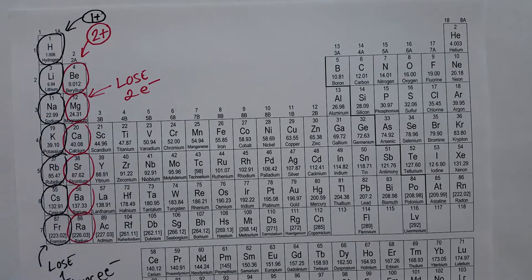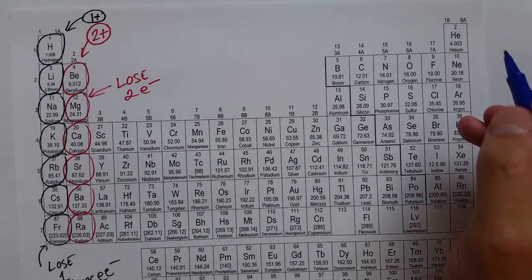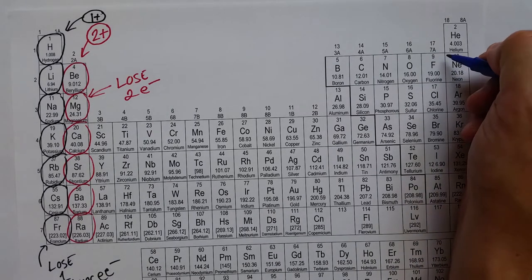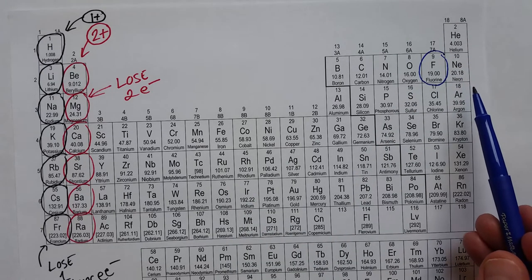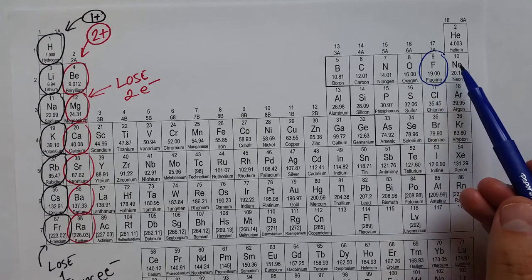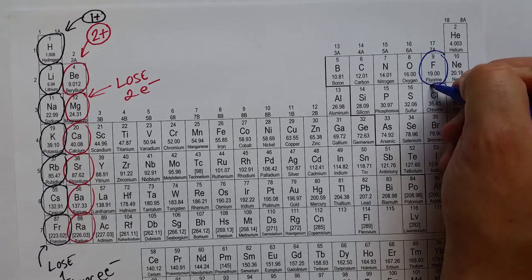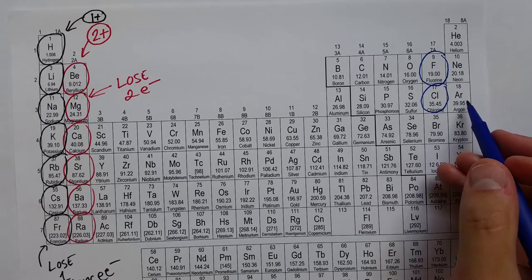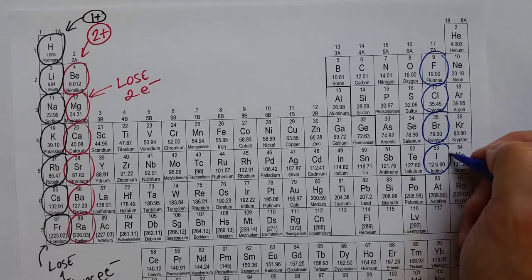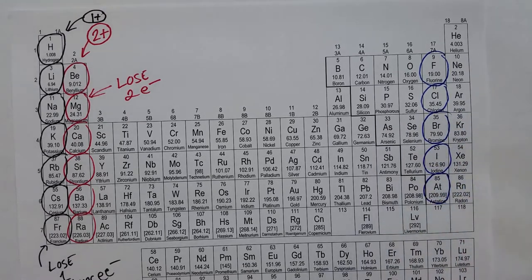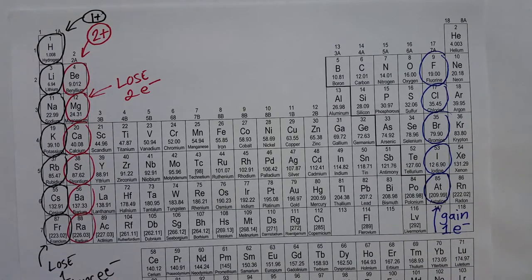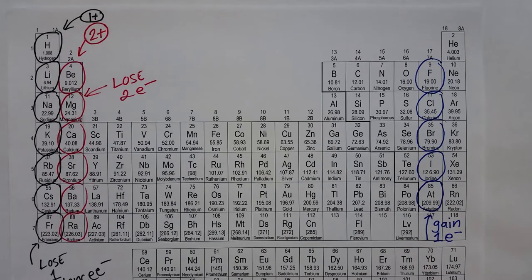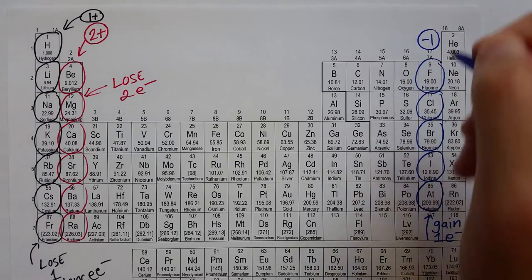On the other side of the periodic table, the nonmetals do something different. Instead of losing valence electrons, the halogens in group 7A will gain one electron to achieve the eight valence electron electronic structure. Fluorine gains one electron to be like neon; chlorine gains one to be like argon; bromine, iodine, and even radioactive astatine also gain one valence electron. So these elements gain one electron and overall form a minus 1 charge.